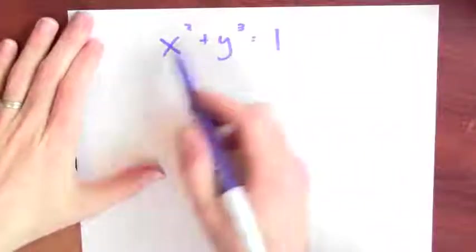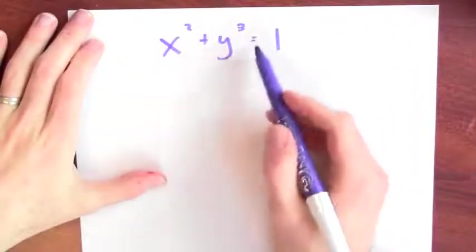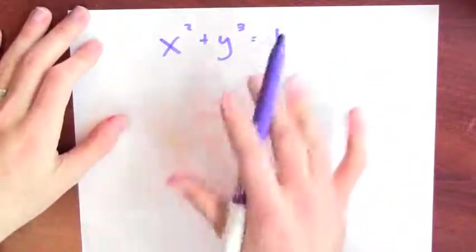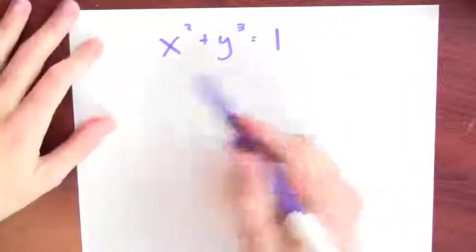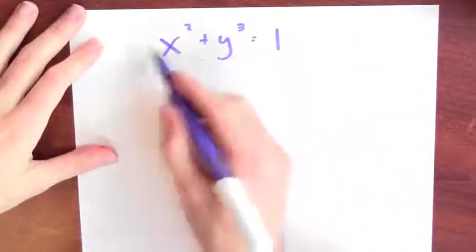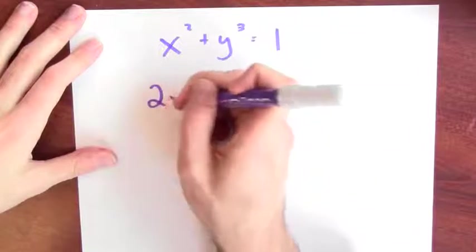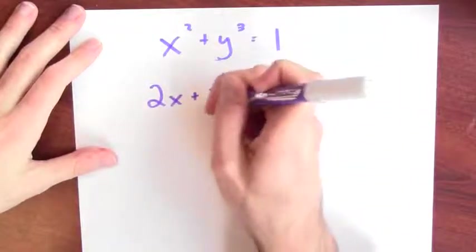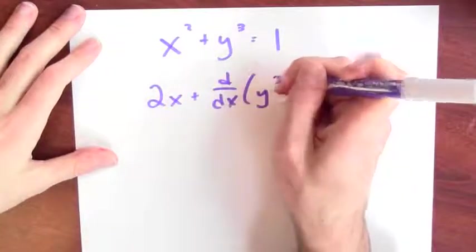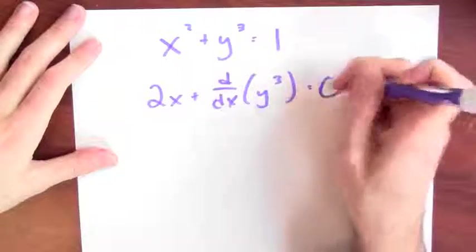To do all these sorts of calculations, the trick is the chain rule. For instance, if you're given some relation like this, x squared plus y cubed equals 1, you just got to make sure to think of y as a function of x. So that when you differentiate both sides, the derivative of the left-hand side is 2x plus the derivative of y cubed equals the derivative of 1, which is 0.